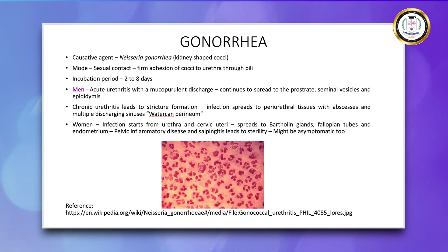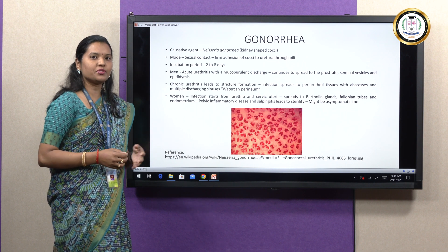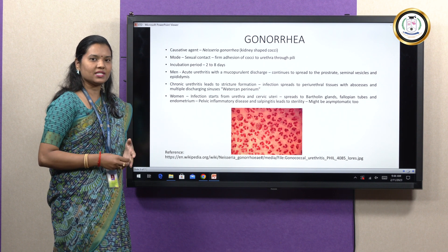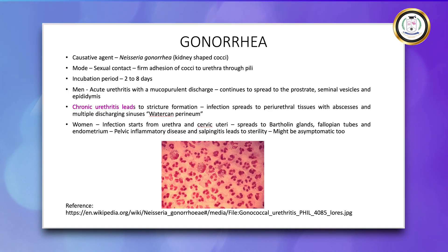In men, the symptoms start with acute urethritis with mucopurulent discharge, which contains the gonococci in large numbers. The infection continues to the epididymis, seminal vesicles, and prostate glands. Chronic urethritis leads to stricture formation, and the spread of infection is seen to the periurethral surfaces, abscesses, and multiple discharging sinuses — a condition called watercan perineum.